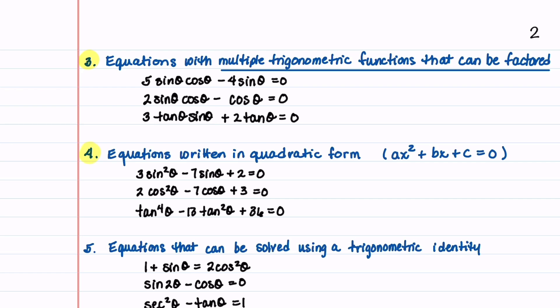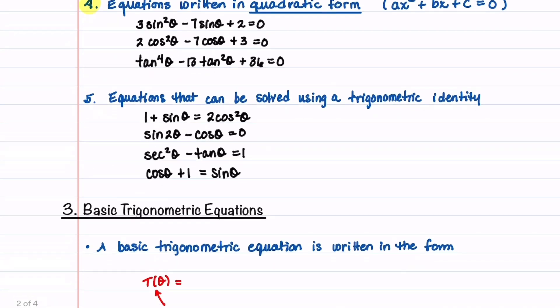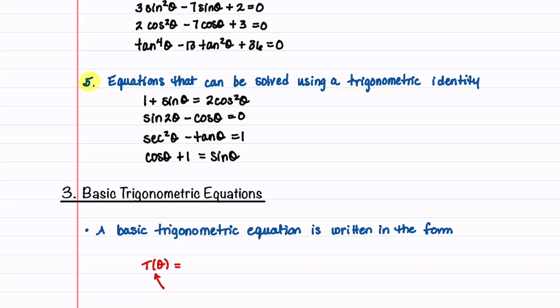The fourth type is equations written in quadratic form — these types of equations can be solved by factoring the quadratic. The last type is equations that can be solved using a trigonometric identity. I have a video for each of these five types of problems and I walk through solutions to all the equations that I've listed.